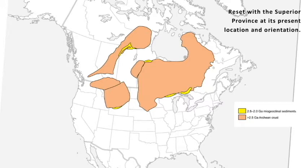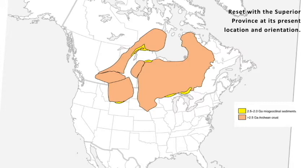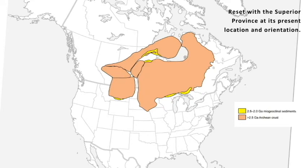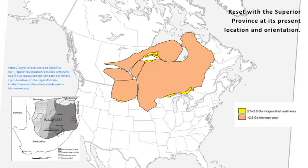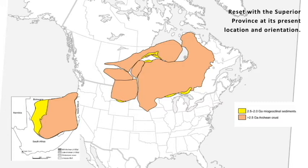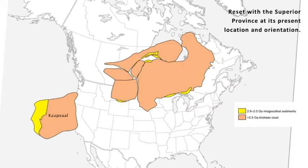These continental fragments do reassemble and they fit pretty well against the Superior craton — it's actually a pretty good fit. There's also a craton in South Africa that's significant here: the Kaapvaal craton. I've taken it, colored it brown and yellow to match the scheme, and it's going to be discussed in a moment. At present it's in South Africa, but it wasn't always that way.